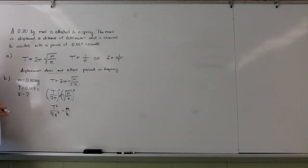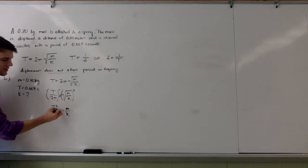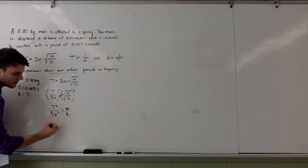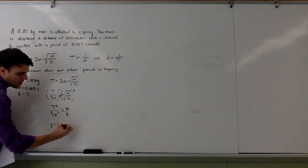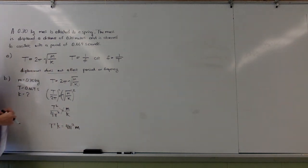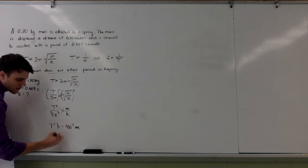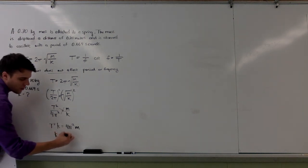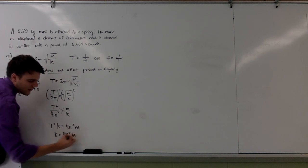I think the most easy would be to cross multiply both of these, or cross multiply these two fractions. And I will end up with t squared times k equals 4 pi squared times m. And now the last step to solve for k is simply to divide both sides by period squared. So k will be equal to 4 pi squared times m all over period squared.